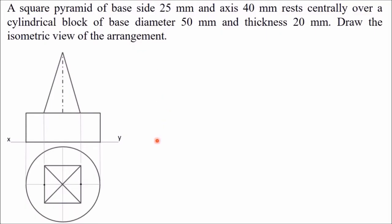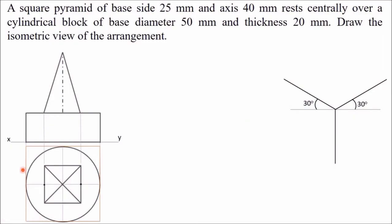Now we will draw the isometric view. First, enclose the circular base of the cylinder by a square. In front view and top view, all horizontal and vertical lines are called isometric lines. These isometric lines are drawn along the three isometric axes. In the top view, all horizontal and vertical lines are drawn along the two 30-degree lines — each line is inclined at 30 degrees from horizontal. In the front view, horizontal lines are drawn along the 30-degree line, but vertical lines are drawn along the vertical axis.